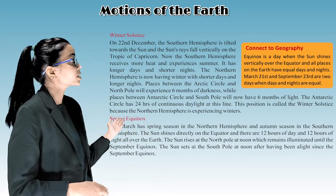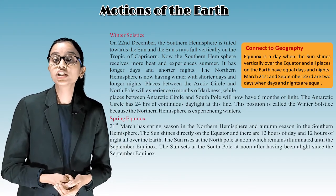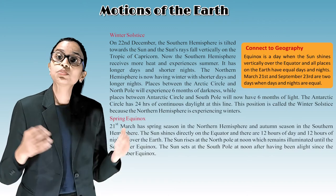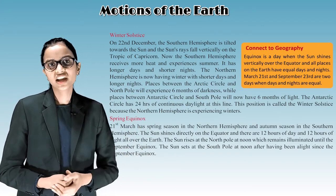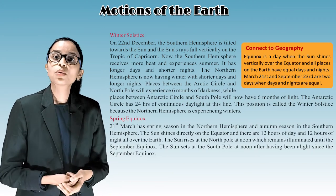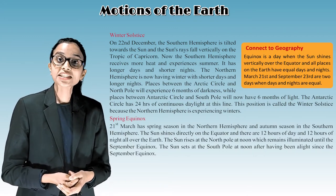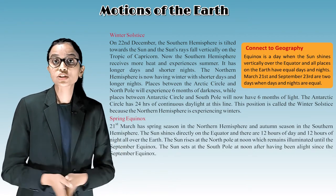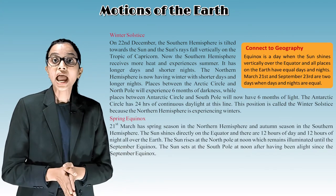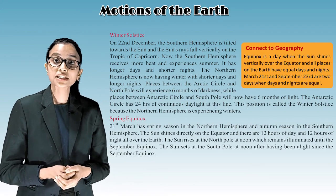Winter solstice: On 22nd December, the southern hemisphere is tilted towards the sun and the sun rays fall vertically on the Tropic of Capricorn. The southern hemisphere receives more heat and experiences summer, with longer days and shorter nights. The northern hemisphere is now having winter with shorter days and longer nights. Places between the Arctic Circle and the North Pole experience six months of darkness, while places between the Antarctic Circle and the South Pole have six months of light. This position is called the winter solstice because the northern hemisphere is experiencing winter.